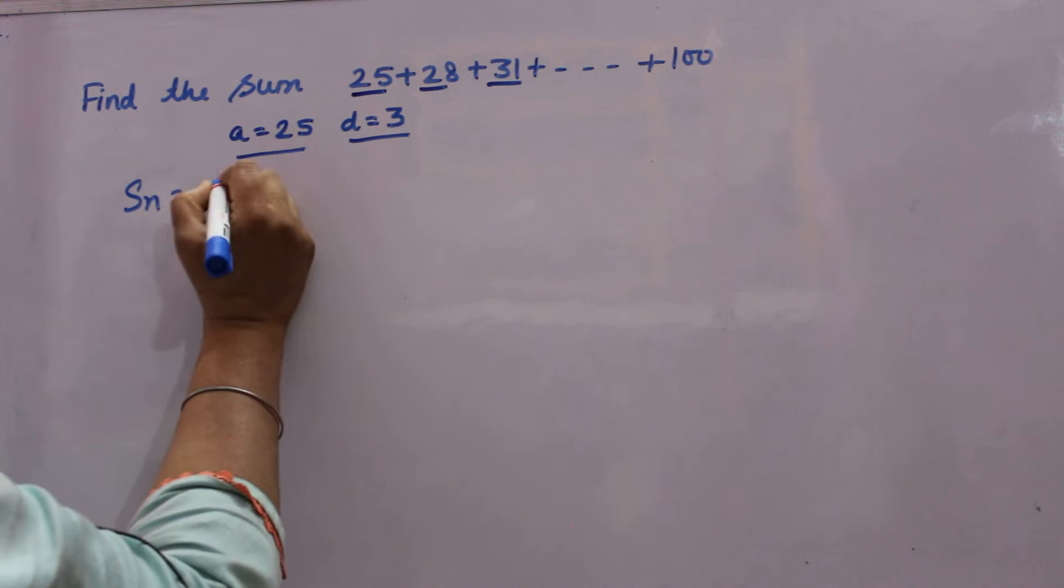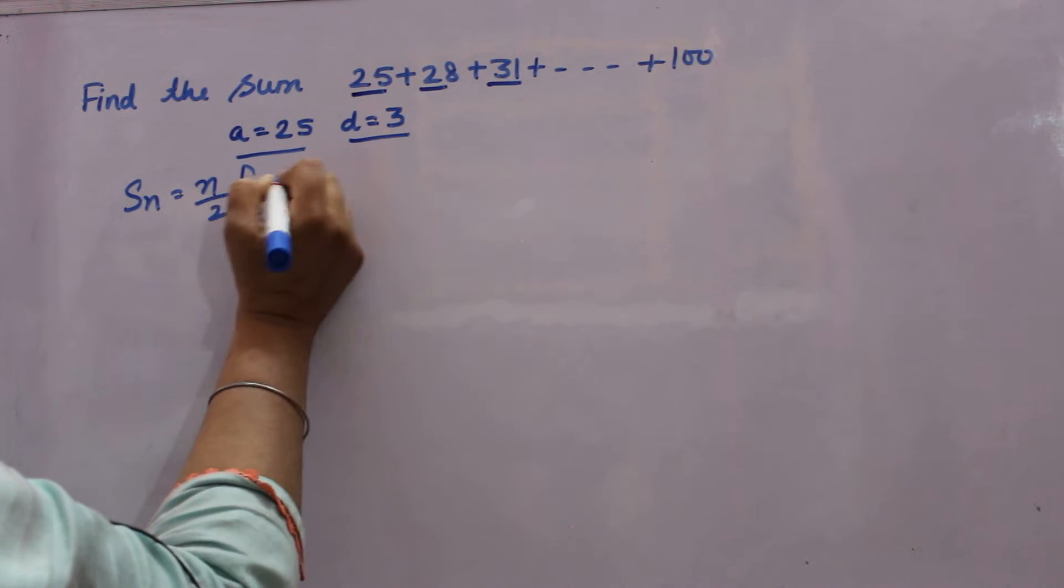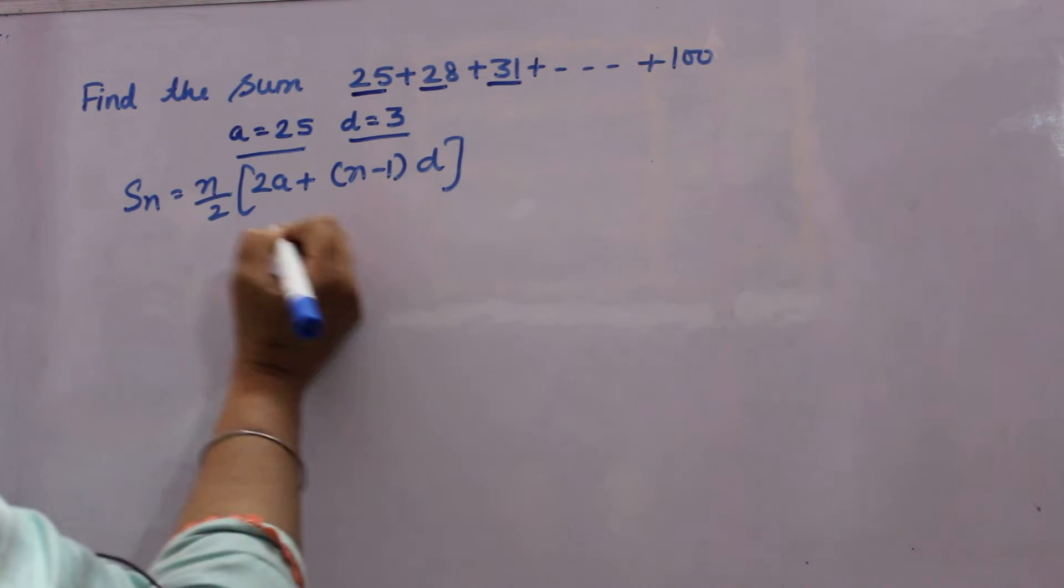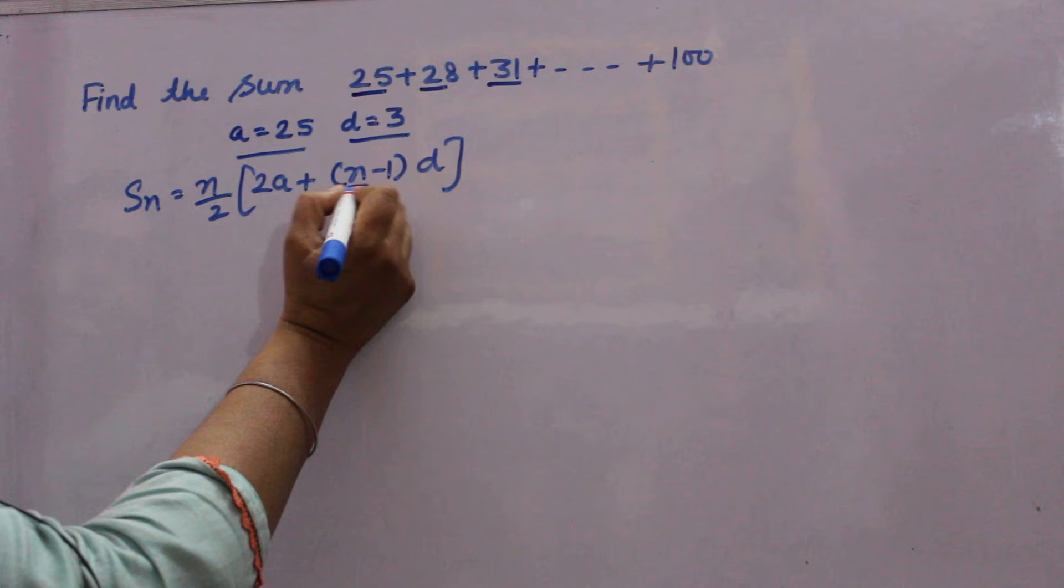Formula is SN equals N by 2, 2A plus N minus 1 into D. Now you want firstly N for this.